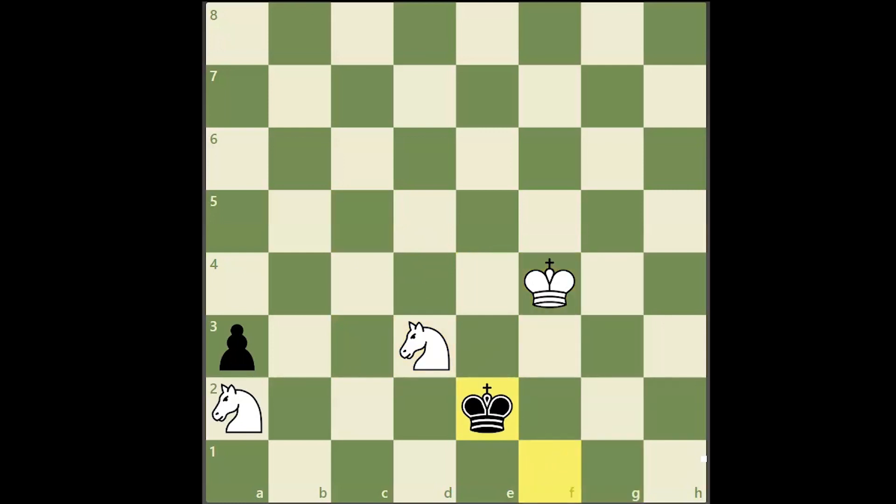This is possible because with a rook pawn, you can sometimes checkmate with just a king and one knight. We have to chase the king to the queen side so that the second knight can deliver checkmate.